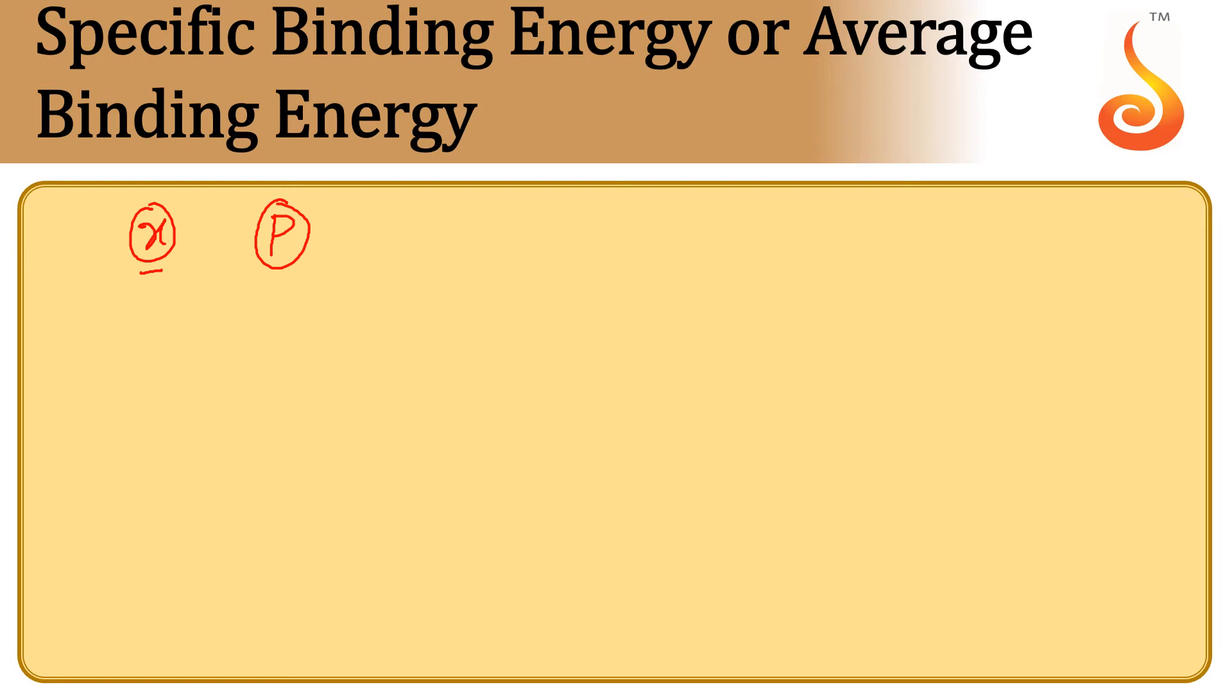So how do we calculate specific binding energy? Specific binding energy can be written as BE bar. BE means binding energy, which can be written as the binding energy divided by mass number A. Mass number tells us the total number of nucleons in the nucleus.